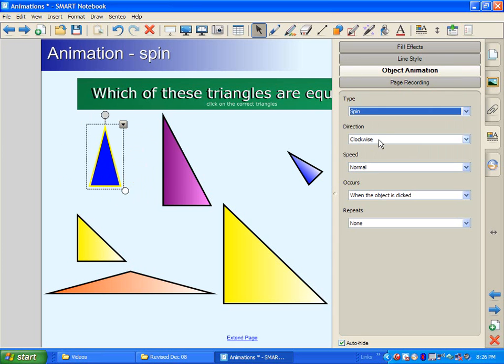And then you have different choices. For each animation, you will have some type of choices. This one, you can do clockwise or counterclockwise. And then you do have choices on the speed. And then also, when do you want the object to be animated? When the object is clicked on or when you enter the page? On this particular case, I'm going to click when the object is clicked.